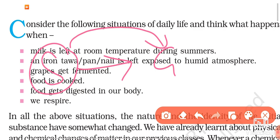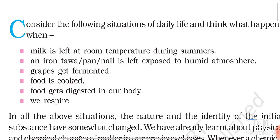Now, if you look at a change in your environment, how would you identify that a chemical reaction is taking place? For example, if you observe a chemical reaction in your laboratory, how do you identify that a chemical reaction has occurred? To understand this, we need to do some activities given in our NCERT textbook.